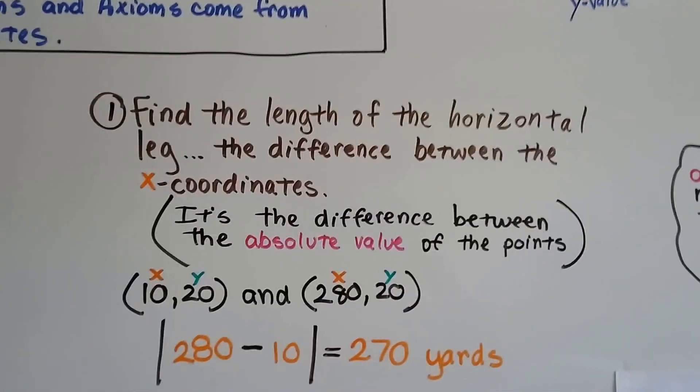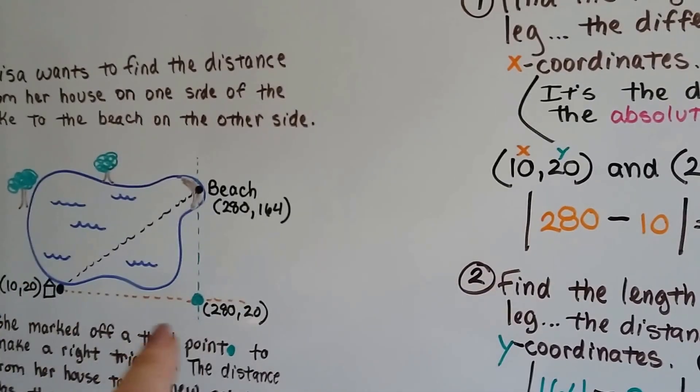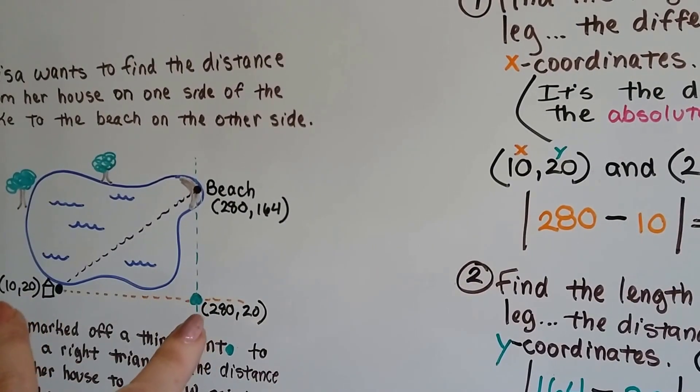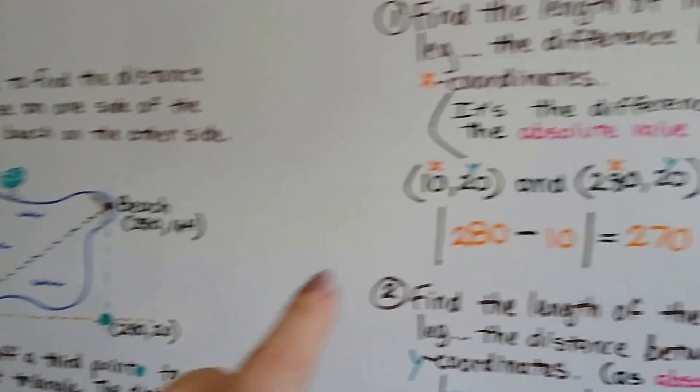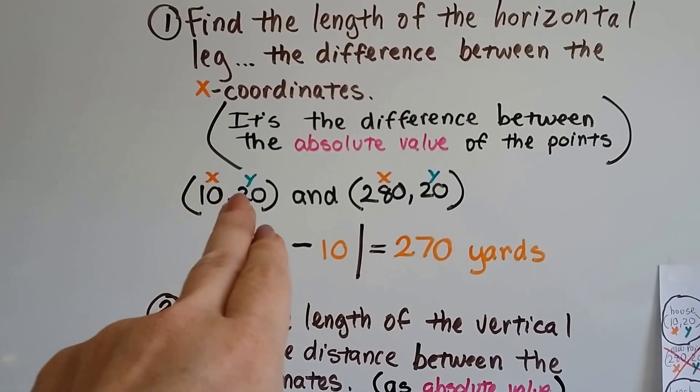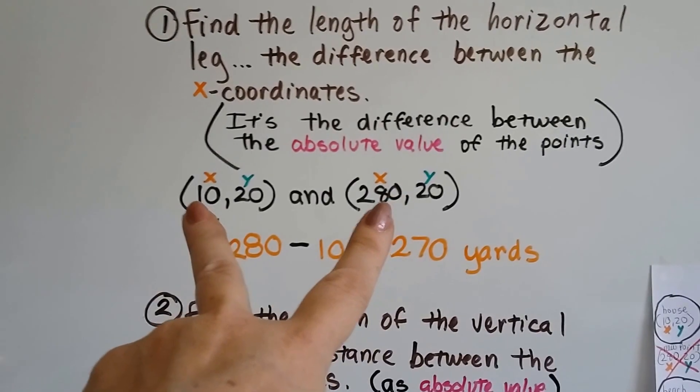So, the first thing we do is find the length of the horizontal leg. That's the differences between the x-coordinates. So that's the difference between these coordinates and these coordinates on x. And in coordinate pairs, the first one is x, right?